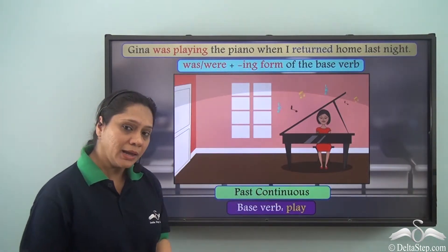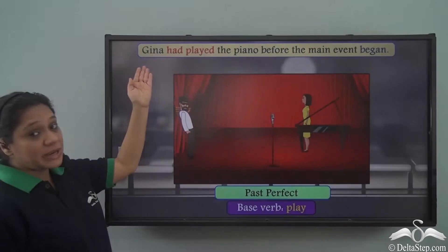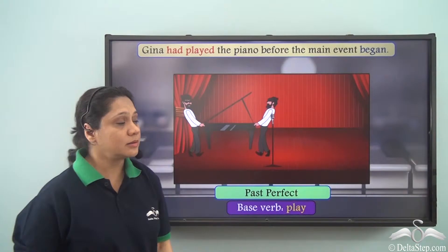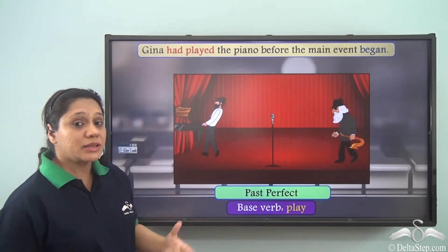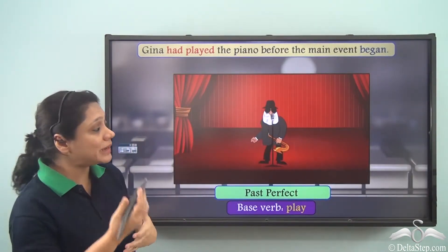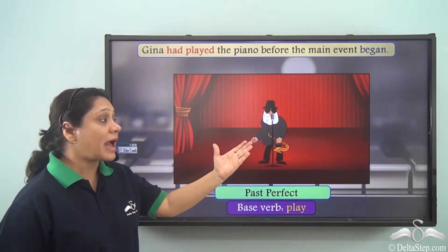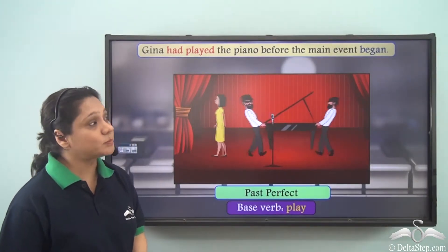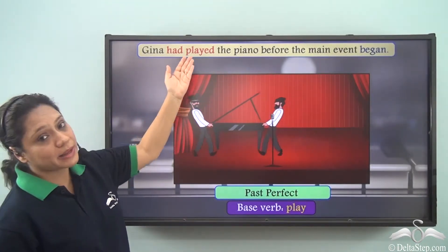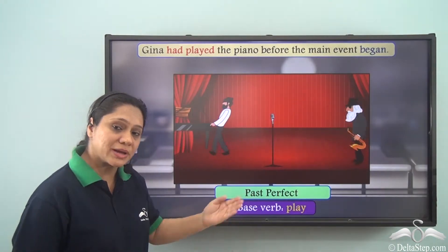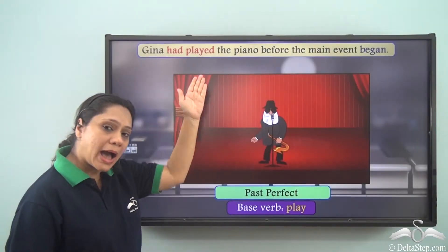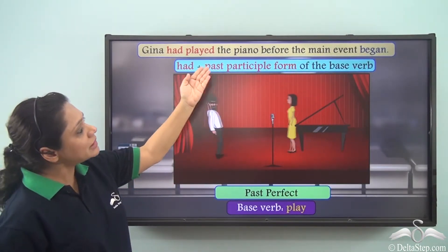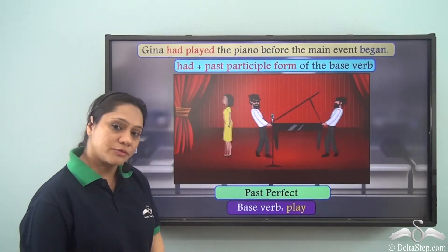'Gina had played the piano before the main event began.' Gina started playing the piano, completed playing, and then she got up to leave the stage for the main event to begin. So 'had played' is in the past perfect tense, and the verb 'had played' is formed by using 'had' with the past participle form of the base verb.